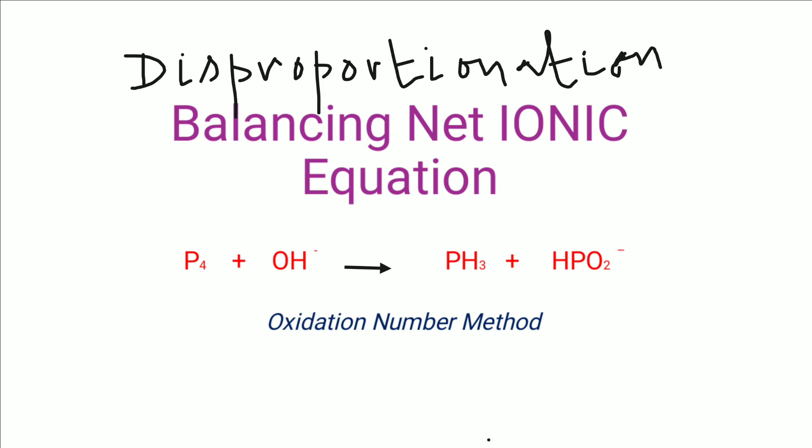Hello friends, let's balance one more net ionic equation. This equation is for the reaction between phosphorus and hydroxide ion to form phosphine and hydrogen phosphite ion. This redox reaction is a special kind of reaction because the same substance undergoes both reduction and oxidation simultaneously, so it is termed a disproportionation reaction. We are going to balance this reaction now by the oxidation number method.